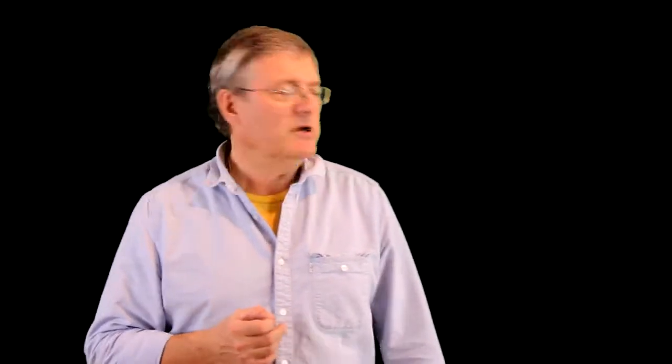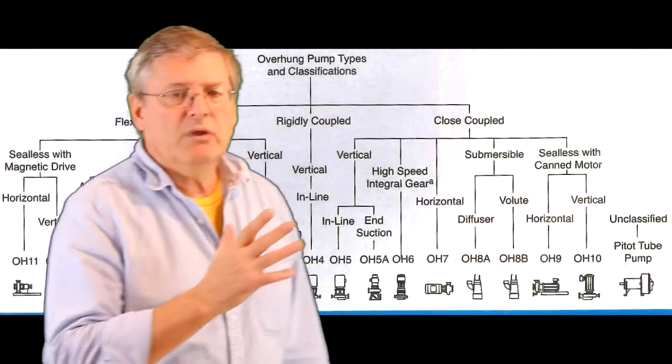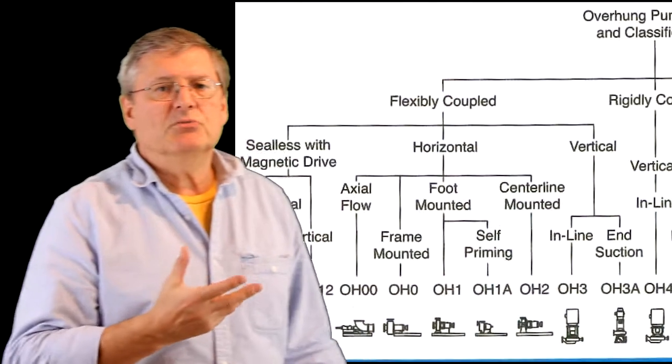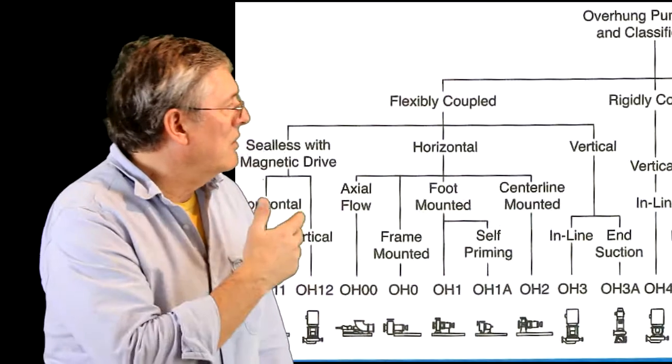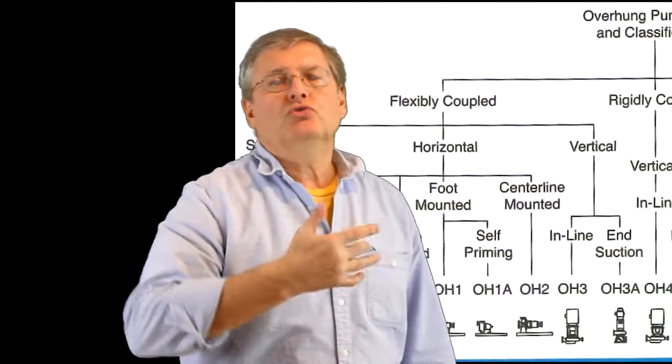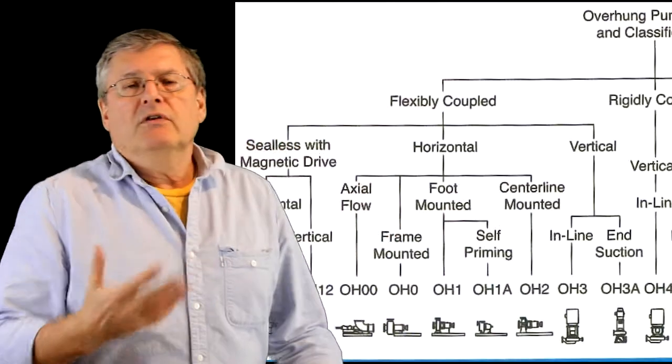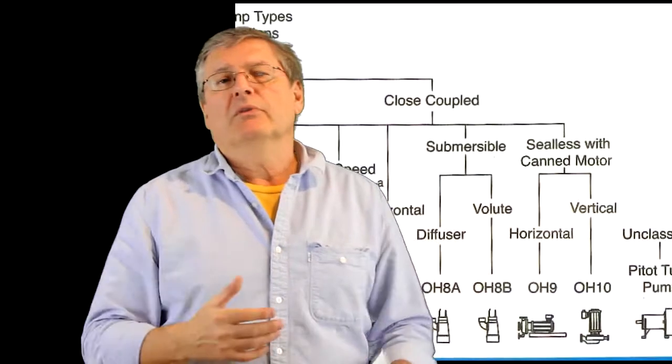So let's talk about industrial type pumps. The Hydraulic Institute came up with a nomenclature type system or system of simple identifiers for pumps that they call OH1, OH2, OH3. That's an easy way to refer to a style of pump. So OH means overhung.